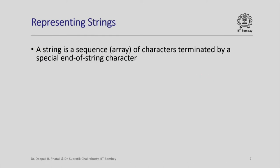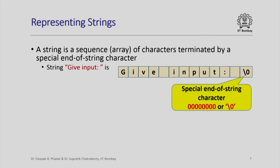How do we represent strings in a computer? A string is really a sequence or array of characters that is terminated by a special end-of-string character. For example, the string 'Give input: ' has each character stored in one box — uppercase G, lowercase i, v, e, a space, then i, n, p, u, t, colon, and a space — and at the end there is a special end-of-string character, which is the all-zero unsigned 8-bit integer.